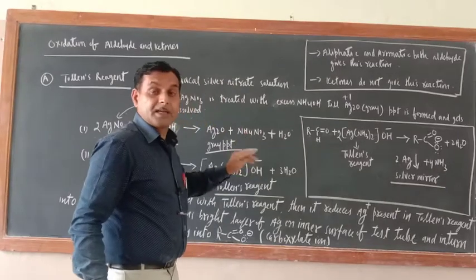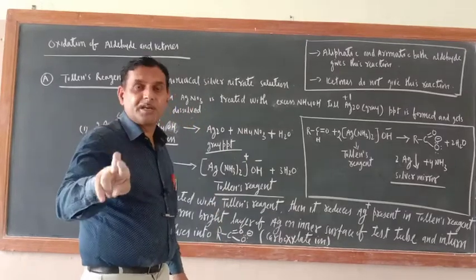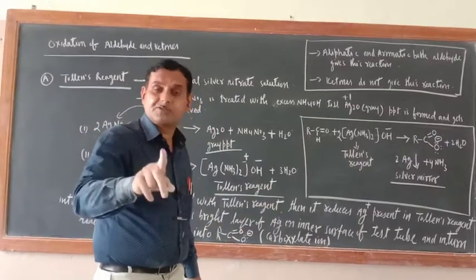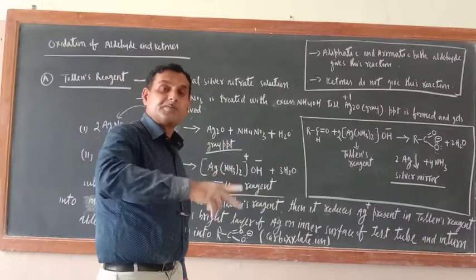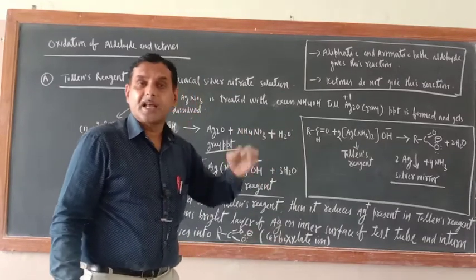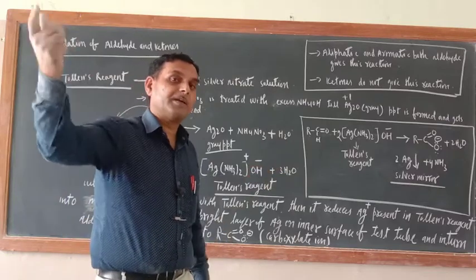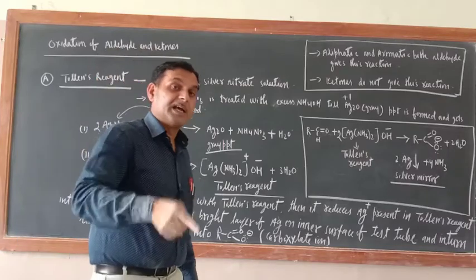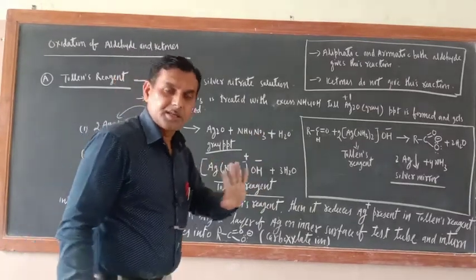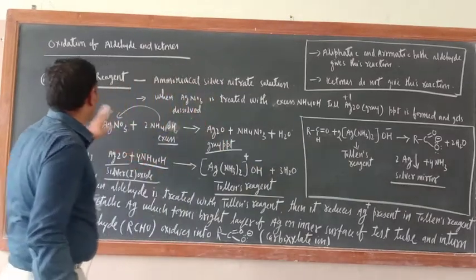This test can be used to distinguish between aliphatic ketone and aliphatic aldehyde, and between aromatic aldehyde and aromatic ketone. However, it cannot distinguish between aliphatic aldehyde and aromatic aldehyde (like benzaldehyde and acetaldehyde) because both give this test. Acetone and benzaldehyde can be distinguished, as can acetaldehyde and acetone — aldehyde gives this test, ketone does not.